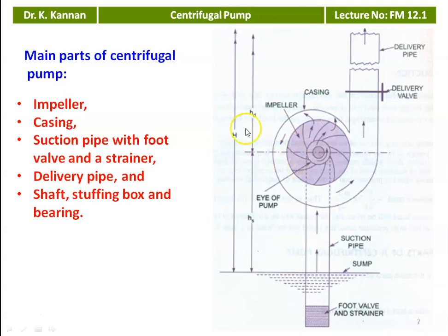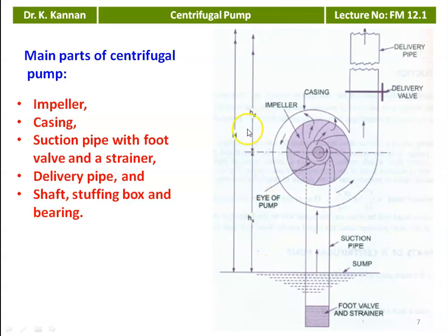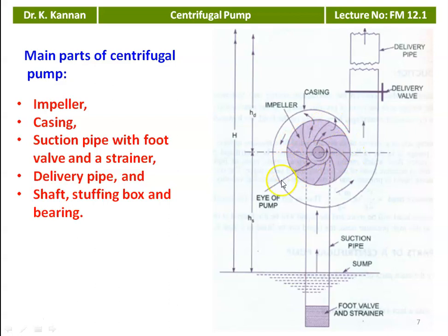The centrifugal pump is used to raise the head of the water. The total head raised is the sum of suction head and delivery head. Hs is the suction head and Hd is the delivery head. If there are no losses, total head equals Hs plus Hd. The suction head is the height between the water level in the sump and the center of the centrifugal pump. The delivery head is the distance from the center of the pump to the water level in the tank.